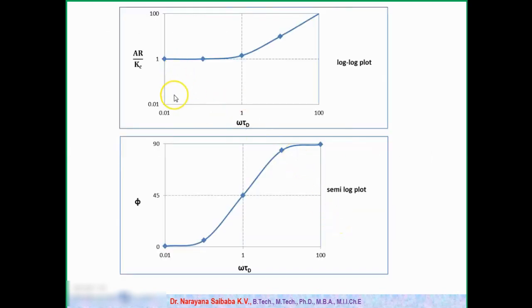Once we have this data in our hand, we can draw the Bode diagram like this. Here the first plot is log(AR/Kc) versus log(omega*tau_d), it is a log-log plot. And second one is phase angle phi versus log(omega*tau_d), it is a semi-log plot. If you observe here, phi value is moving from 0 to 90 as omega values change from very low values to high values. This is how Bode diagram we get for PD controller.